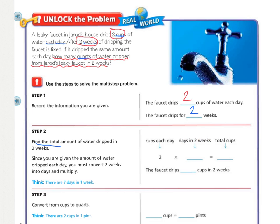And how many days are in two weeks? Well, we know that there are seven days in one week, and I can do seven times two in my head. So in two weeks, there are 14 days. And so if I multiply the number of cups in two weeks, two times 14 equals 28 cups. So how many cups are dripped in two weeks? That is 28 cups.